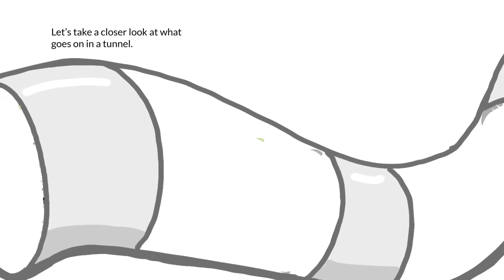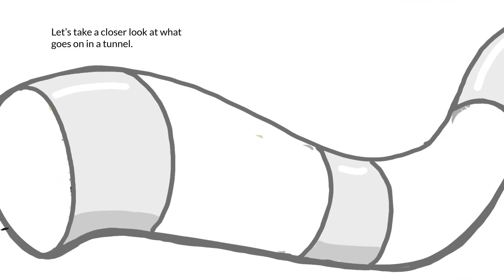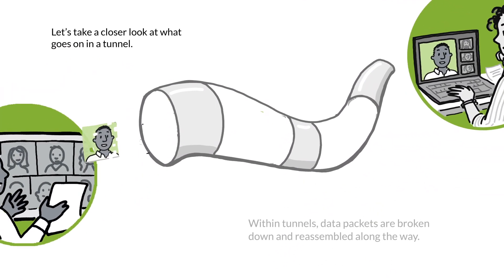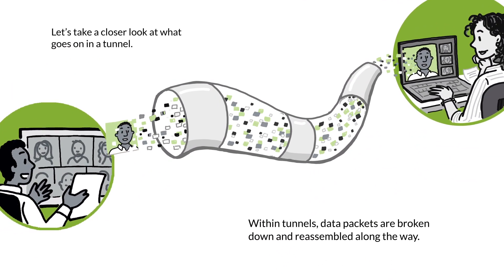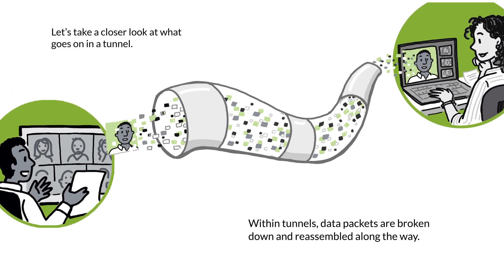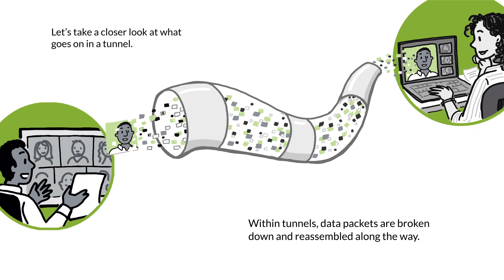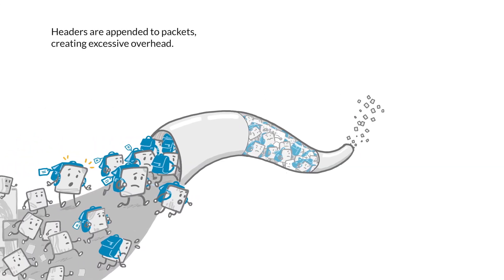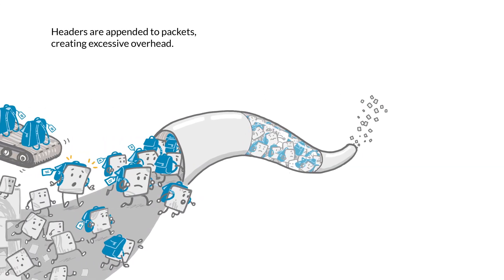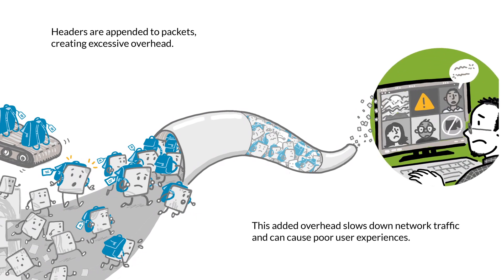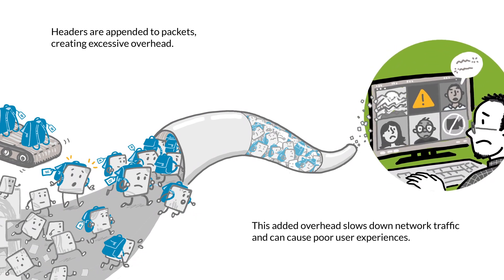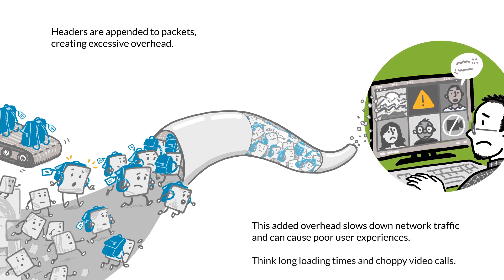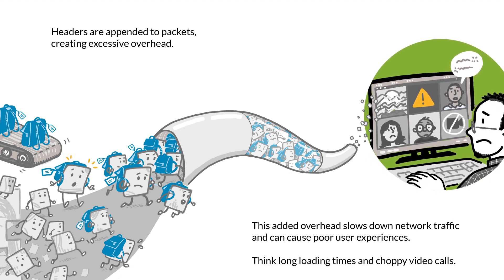Let's take a closer look at what goes on in a tunnel. Within tunnels, data packets are broken down and reassembled along the way. Headers are appended to packets, creating excessive overhead. This added overhead slows down network traffic and can cause poor user experiences — think long loading times and choppy video calls.